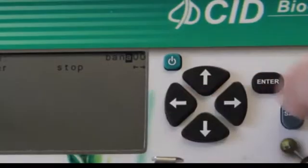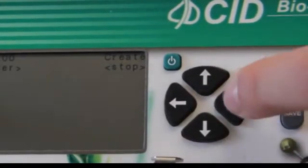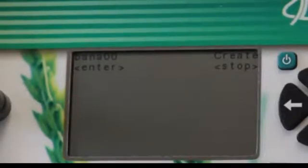Once we are done, we click Enter to save the file. The CI900 will ask us to confirm that this is the name we want for our file.